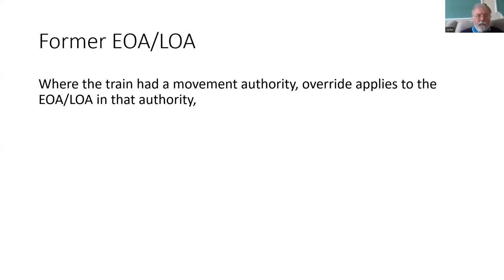So let's talk about this former end of authority, or limit of authority. That makes sense where the train had a movement authority and its driver is proceeding up to that end of authority, normally expecting a new movement authority to be issued, but in this case it's not — could be a danger signal, or the RBC not having sent a movement authority in level two. The driver legitimately needs to go past that end of authority to proceed with the authority of the signaller. That end of authority is stored on board and is the point by which, once definitely passed, you no longer need override.